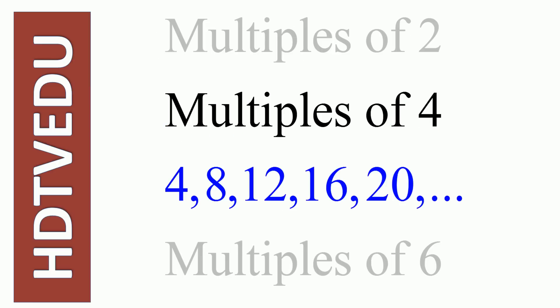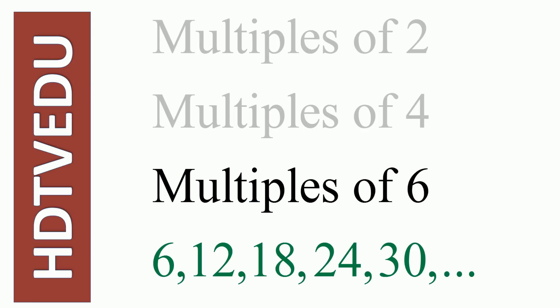Multiples of 4: what are multiples of 4? 4, 8, 12, 16, 20. What are multiples of 6? 6, 12, 18, 24, 30. How did we get that? 1 times 6 is 6, 2 times 6 is 12, 3 times 6 is 18.